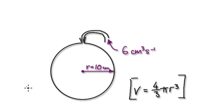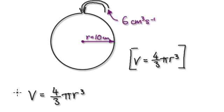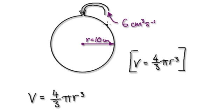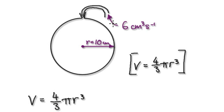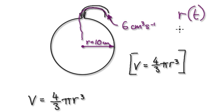Press pause and have a go. To do this, start with your volume formula and try to understand what's going on. Because as you're pumping air into this balloon, the radius is increasing. So over time, r, the radius, is a function of t. Over time, the radius does depend on time, so r is a function of time.